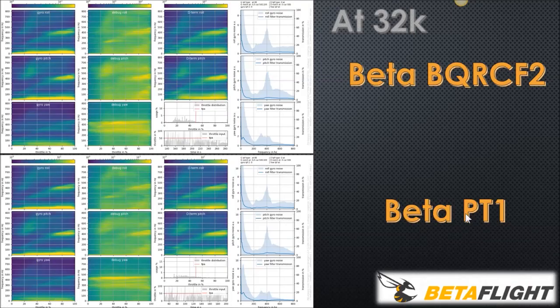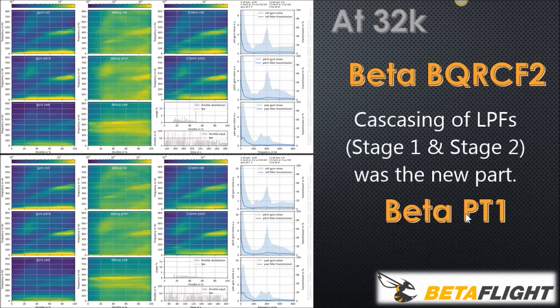Now we're going to make the jump to Betaflight, with the assumption that the Butterflight BQRC-F2 is the same exact code as the Betaflight one. We're going to drive home that all the filtering — the BQRC, the FKF, the Butterworth — is essentially the same attenuation and phase delay as the classic PT-1.